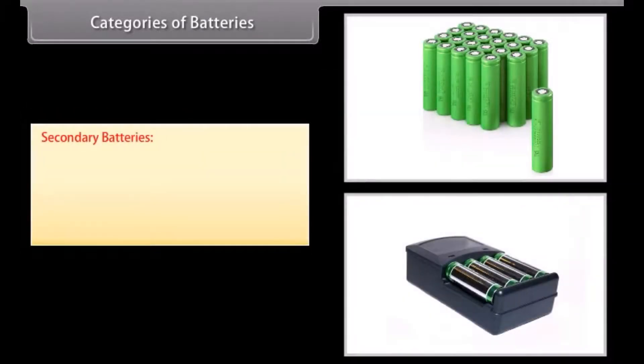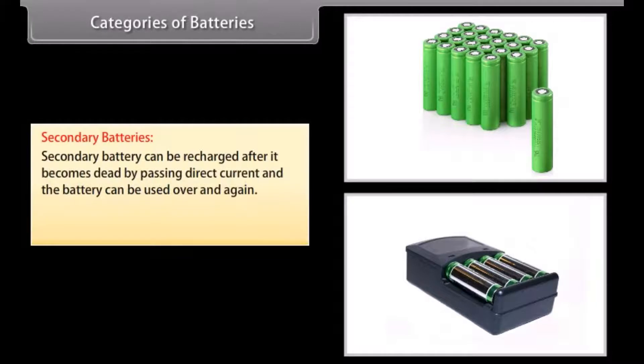Secondary batteries. Secondary battery can be recharged after it becomes dead by passing direct current, and the battery can be used over and again. For example, lead storage battery and nickel cadmium storage cell.